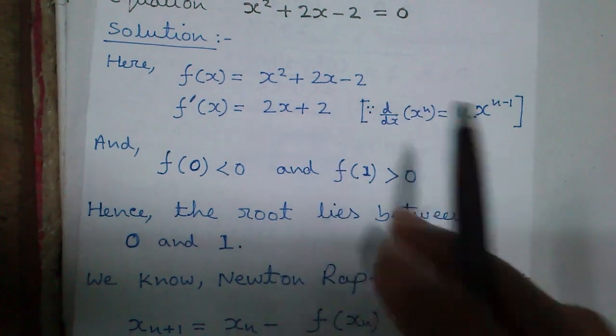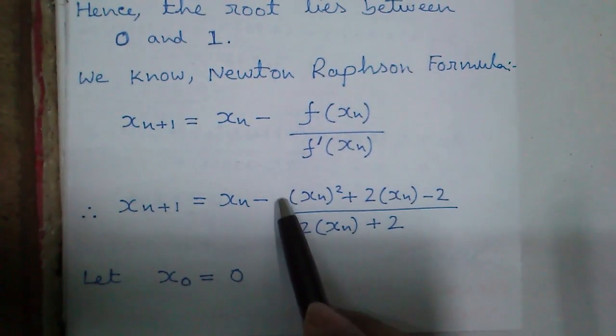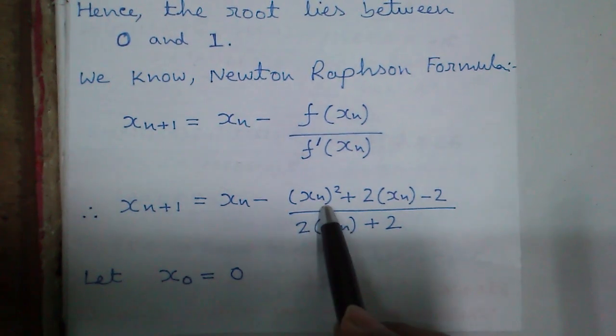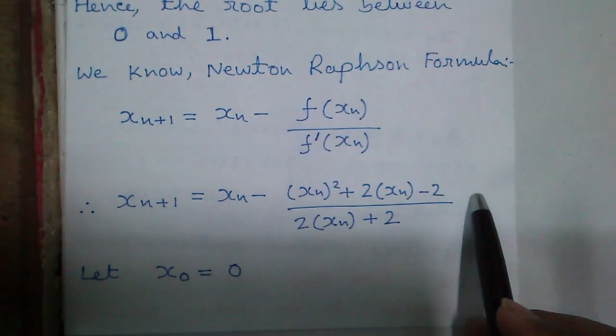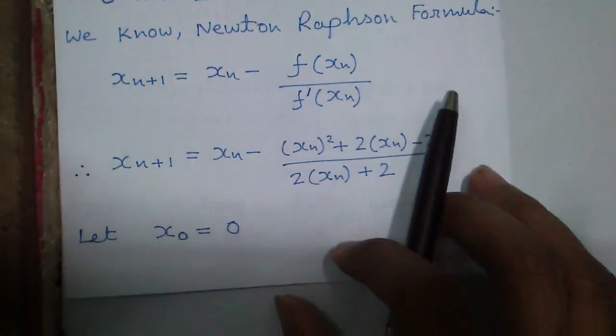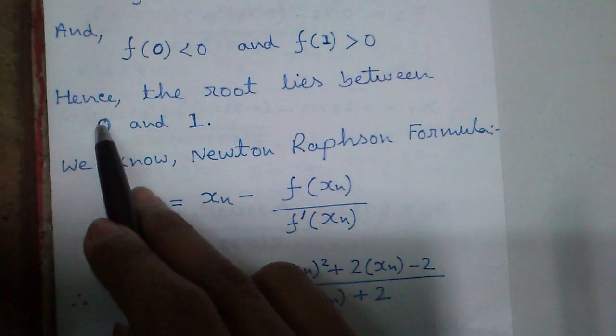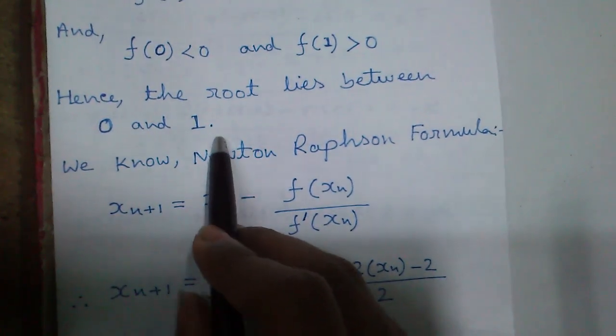By putting this we get x_{n+1} equals x_n minus (x_n whole square plus 2 times x_n minus 2) divided by (2 times x_n plus 2). And let x_0 equal 0. This 0 comes from the lower value of the range. You can also use 1, no problem.